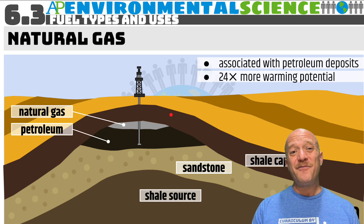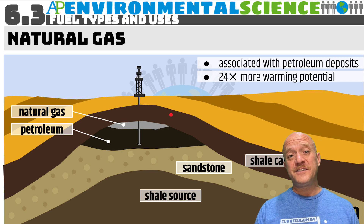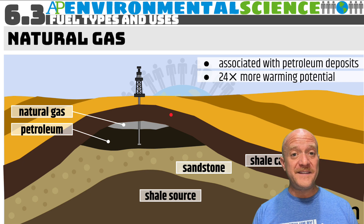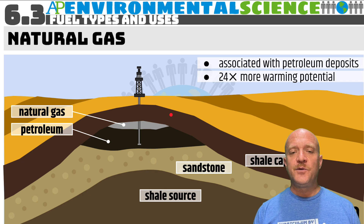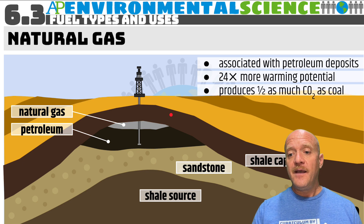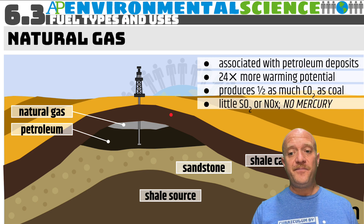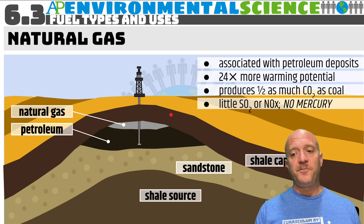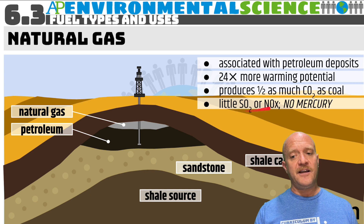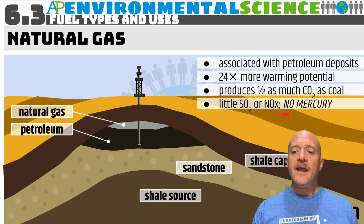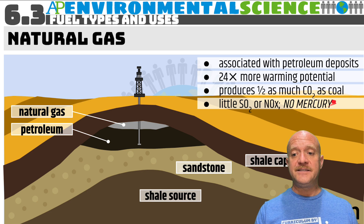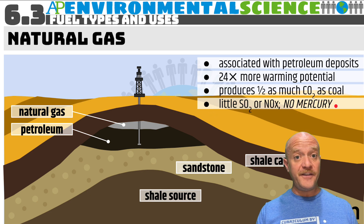Methane has 24 times more warming potential than carbon dioxide, making it a much more serious greenhouse gas. However, natural gas only produces about half as much carbon dioxide as coal when burned, so it is much cleaner. There is also very little sulfur dioxide, very little nitrogen oxides, and no mercury whatsoever — all of which contribute to different types of air pollution.